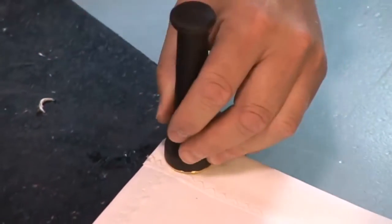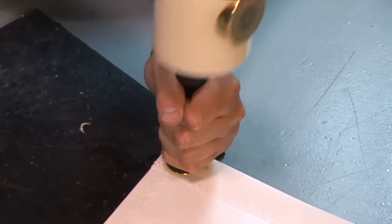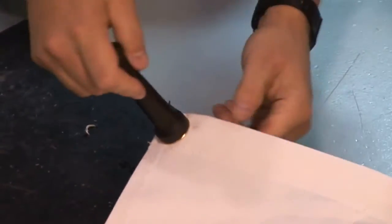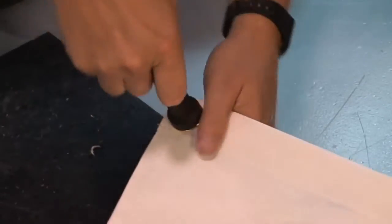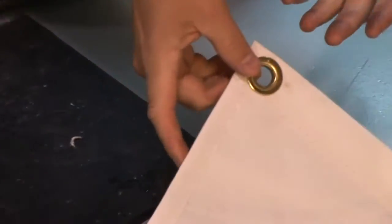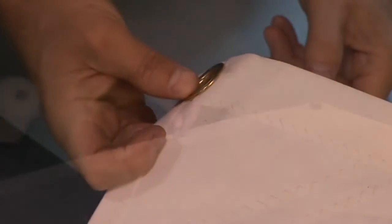This grommet requires a little bit more pounding to get those teeth to sink into the fabric there, so that's what Jeff is doing now. Now that grommet is installed just like it needs to be, nice and tight and flat against both surfaces.